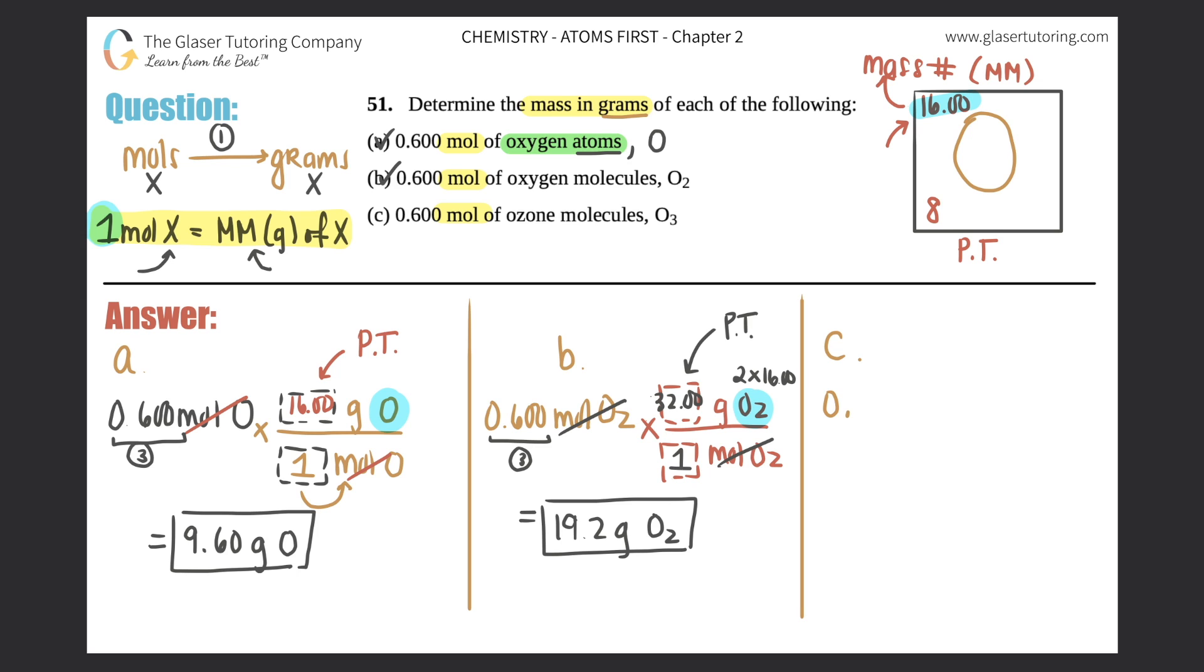For part c: 0.600 moles of ozone molecules, which is O₃, times by that ratio. Moles of O₃ on the bottom, grams of O₃ on top. What's the information between moles and grams? One mole of anything is the molar mass on the periodic table. Since there are three oxygens and each oxygen is 16 for its mass number, this would be 3 times 16, which is 48. Cancel off moles of ozone: 0.600 times 48—you still need three sig figs.